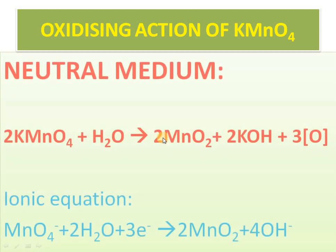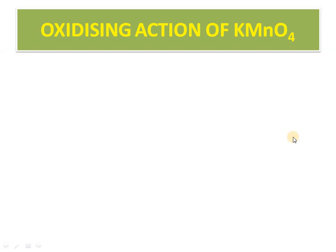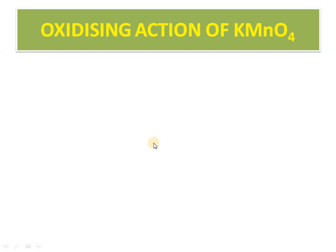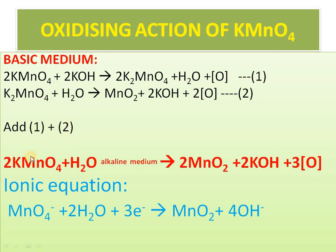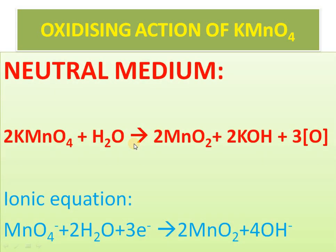The next and last is neutral medium. Looking at the equation: 2KMnO4 + H2O gives MnO2 + KOH + 3O. This is the same as the alkaline medium equation. We are simply writing 'neutral' instead of 'alkaline', because when water is in excess it converts to MnO2 and KOH.